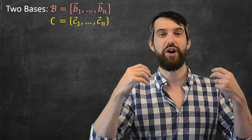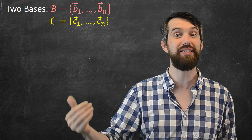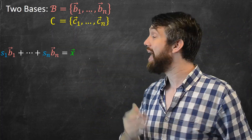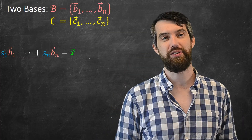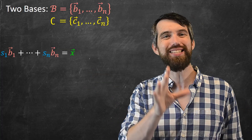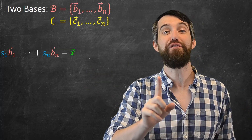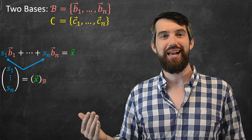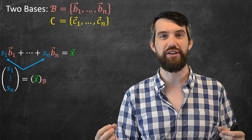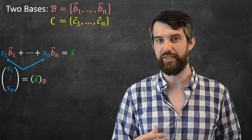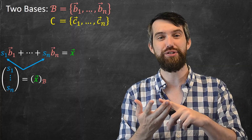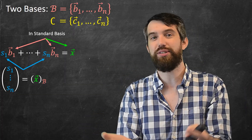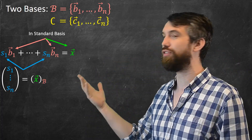Our setting is that I have two different bases: a b basis with b1 through bn, and a c basis with c1 through cn. Any vector x can be written as a linear combination of the b vectors. The coefficients — the s values — are what we call x written in the b basis: they are the instructions for how much to stretch each basis vector. The x and the b vectors themselves are all written in the standard basis.